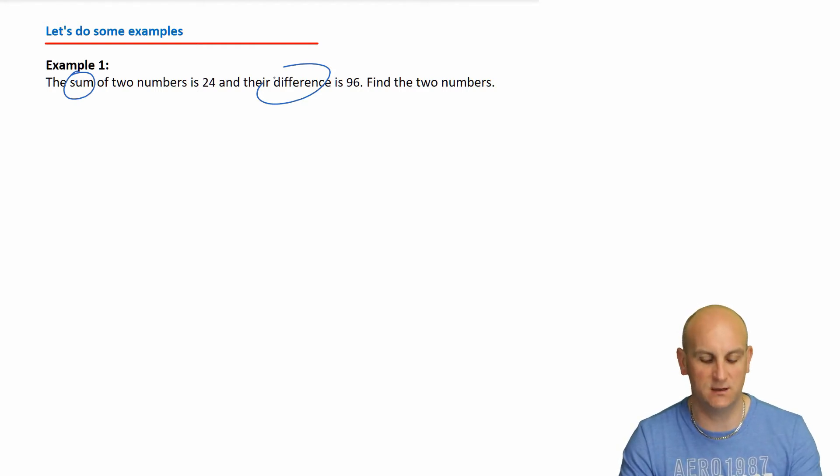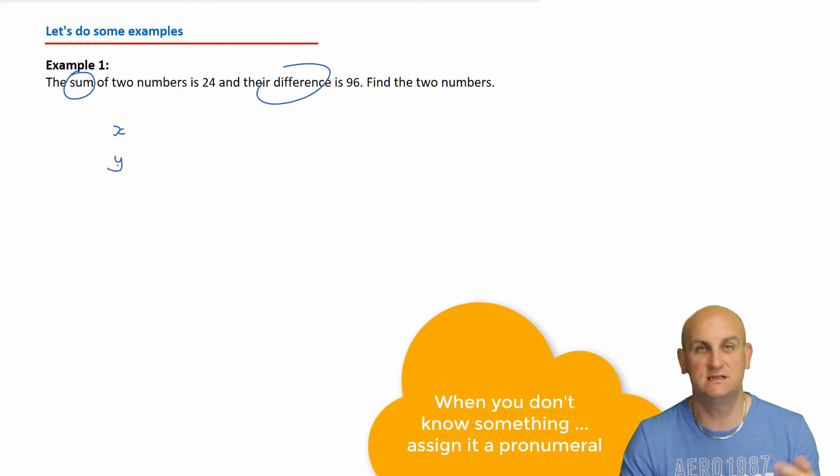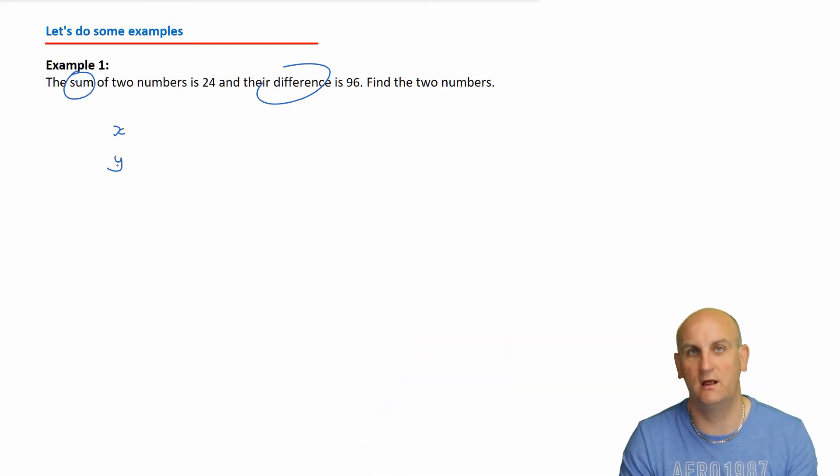Well they haven't told me what these two numbers are, so I'm going to say they're x and y. Makes sense to me. I can call them anything I like, but I'm so used to simultaneous equations being x and y, so I'll just use x and y. The sum of two numbers is 24. Well that's easy. I can write that as an equation: x plus y equals 24.